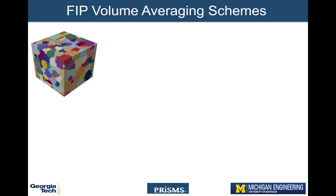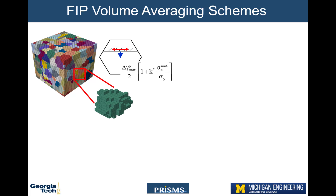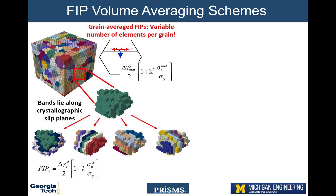Prisms Fatigue has the capability to average FIPs over various domains. The simplest scheme averages FIPs over entire grains. However, grain size follows a log-normal distribution, and comparing FIPs averaged over different size grains may skew analysis of the data. A more refined strategy is to average FIPs over bands. For instance, the face-centered cubic aluminum alloy investigated in the Prisms Fatigue manuscript models crystallographic slip on 12 slip systems and 4 slip planes. Each element of each grain is assigned to 4 bands representative of these slip planes, as illustrated here, and a crystallographic version of the Fatemi-Socie FIP is calculated and averaged across these bands.